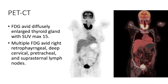On PET-CT, the thyroid gland is again noted to be diffusely enlarged, as well as FDG-avid, with an SUV max of 15. There are also multiple regional lymph nodes which are also FDG-avid.